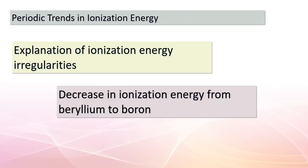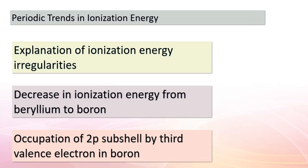Good day, students. Today, we're delving into the intriguing world of periodic trends and ionization energy. Our journey begins by unraveling the subtle but fascinating irregularities within a given period of the periodic table. One such example lies in the transition from beryllium to boron, as we can see in figure 7.10.